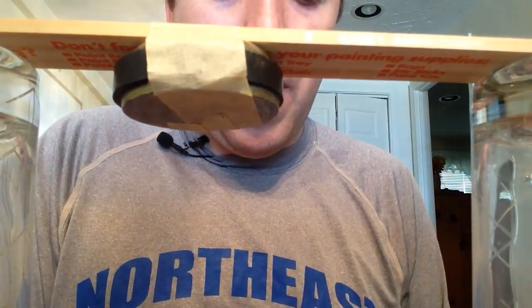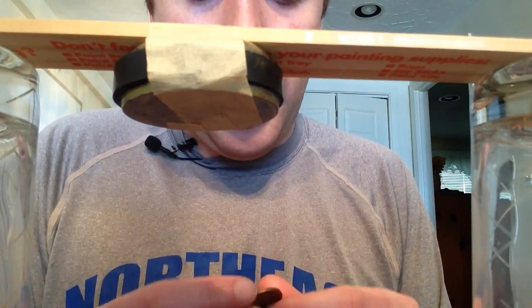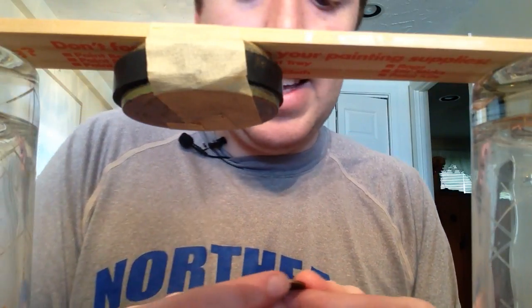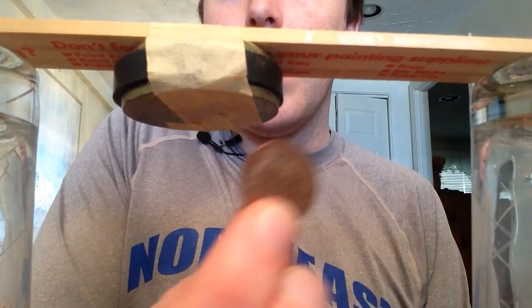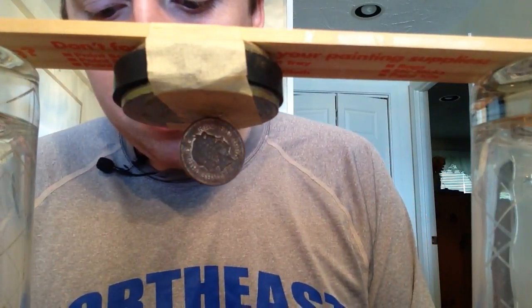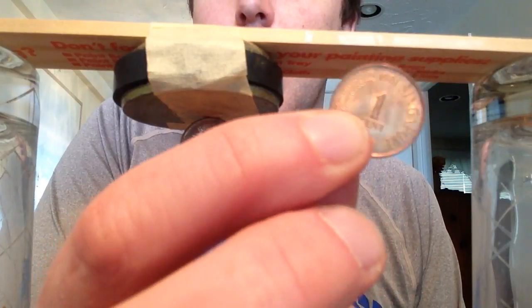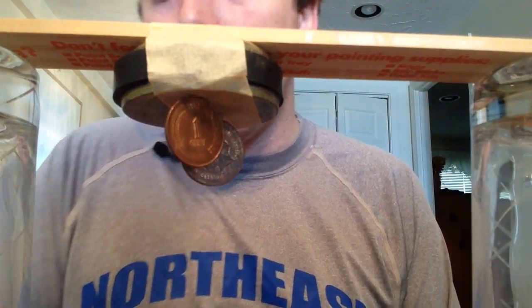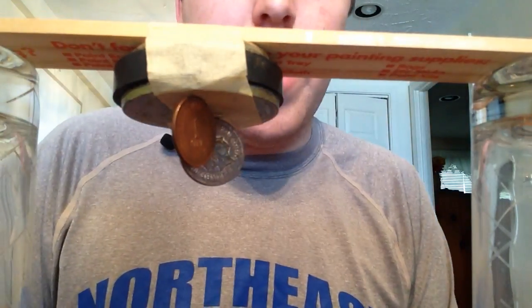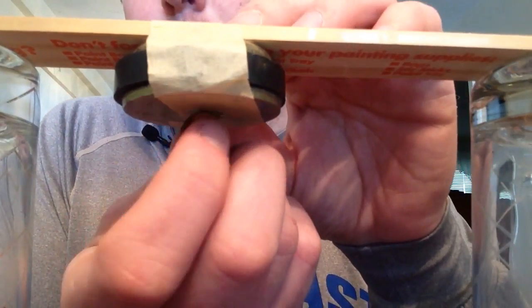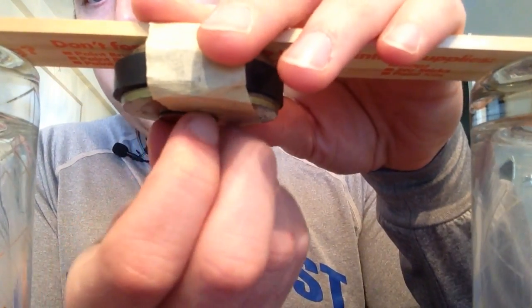Some other random ones are this 1986 one penny coin from the United Kingdom - that is a magnetic coin. We've got some from Singapore - Singapore one cent coin, that is magnetic. So we could kind of go on and on, but I figured this was a good showing so far as to what different magnetic coins are out there.